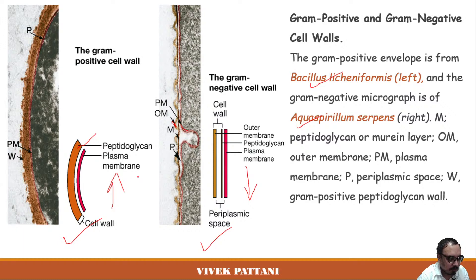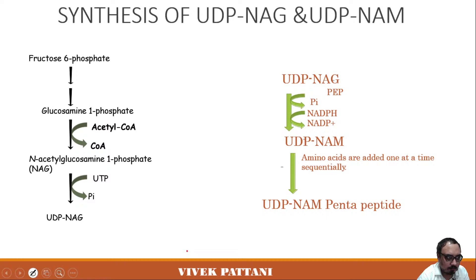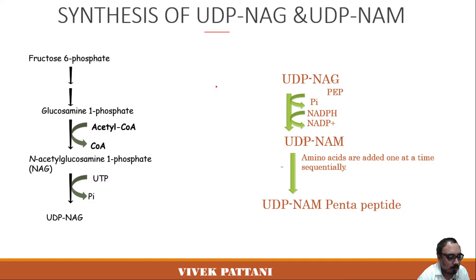Starting with the process of biosynthesis of peptidoglycan, it begins with the synthesis of UDP-NAG and UDP-NAM. UDP stands for uridyl diphosphate, NAG is N-acetylglucosamine, and NAM is N-acetylmuramic acid.